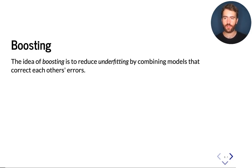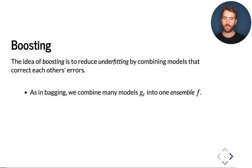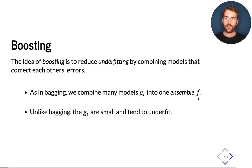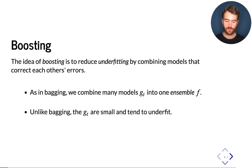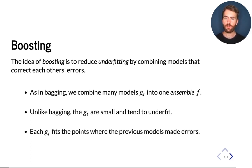Boosting — the set of algorithms we're going to look at in this lecture — can be seen as a way of reducing underfitting by combining different machine learning models into a larger, more powerful model. In that sense, it is quite similar to bagging: we combine many simpler models into one larger model that we're going to call the ensemble model, denoted F. But unlike in bagging, where the base models tend to be too expressive and we want to reduce their overfitting, here the models G are too small and too simple, and they tend to underfit the data.